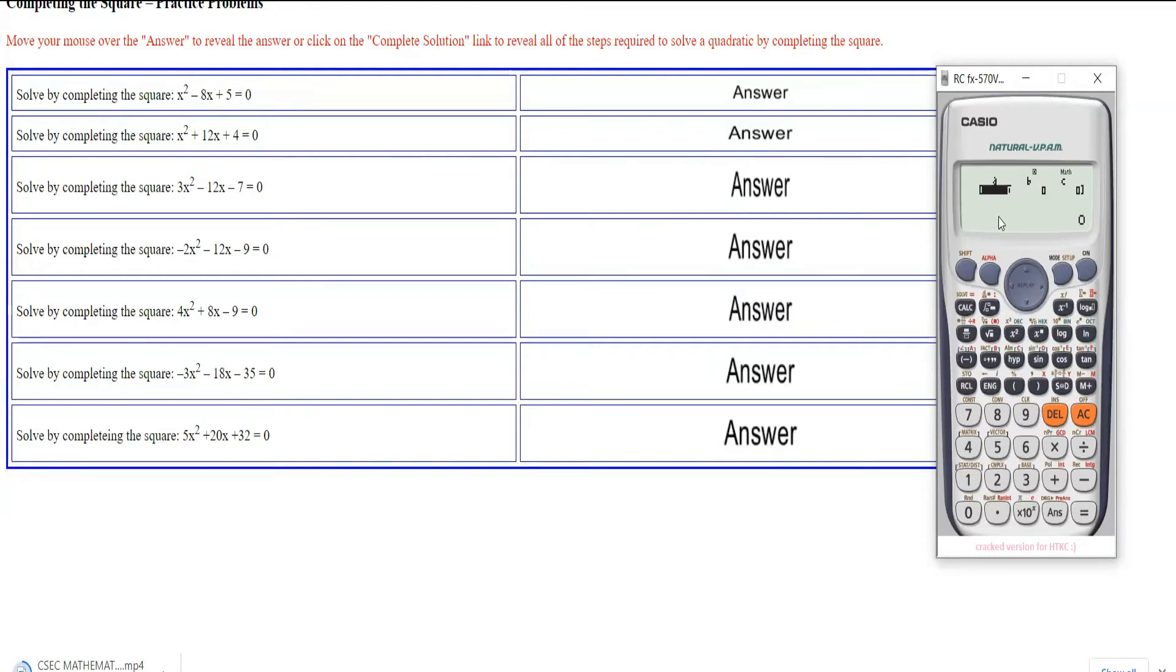Now you put in the coefficients. The coefficients would be 1, -8, and 5. So you insert 1 for a, -8 for b, and you insert 5 for c. And you press equal. What it will first do is give you the solution.